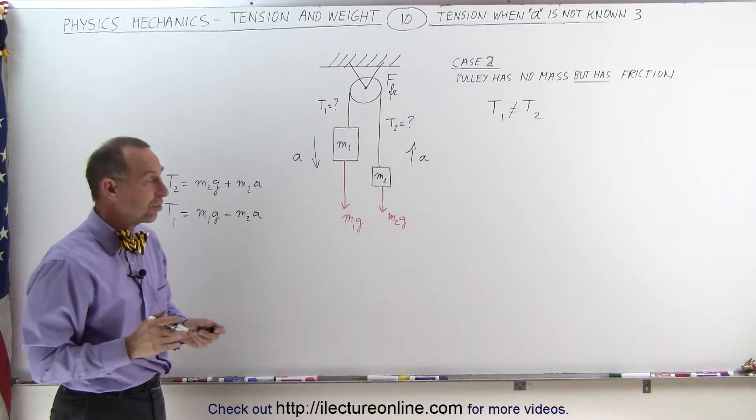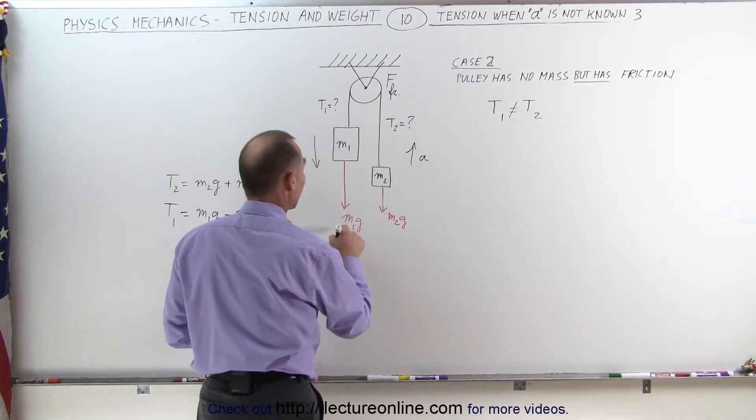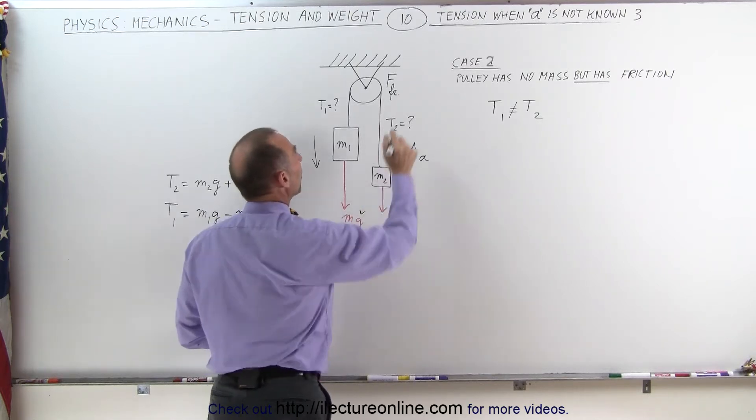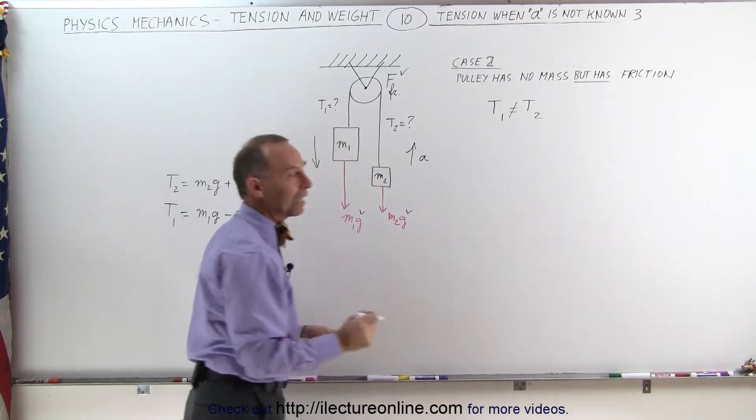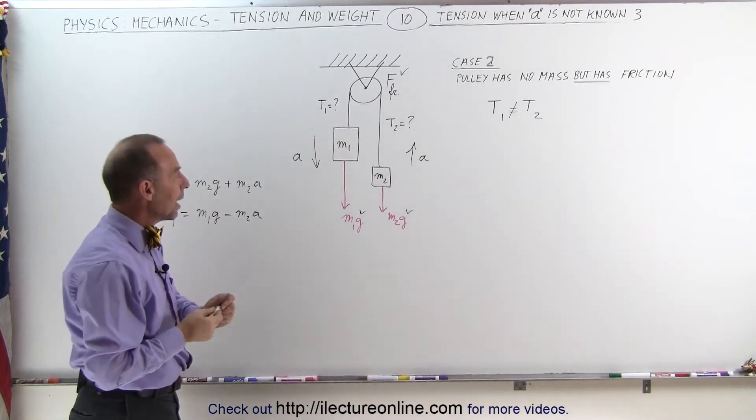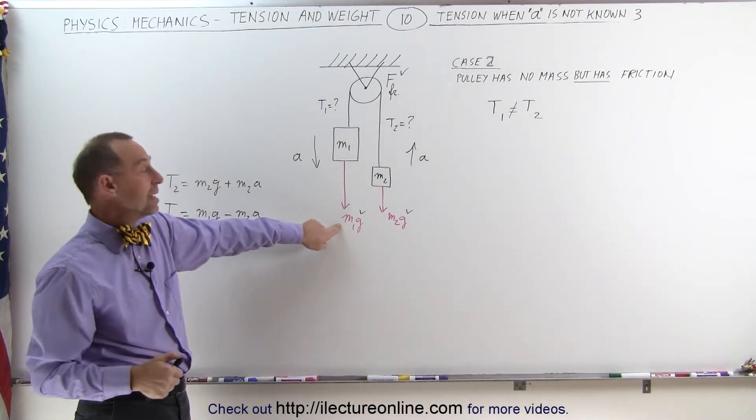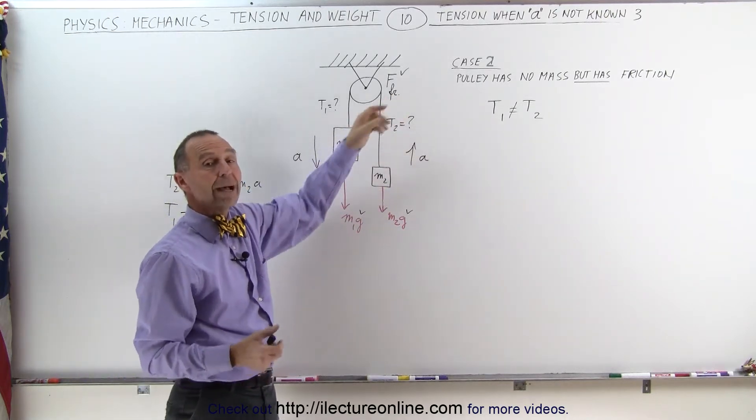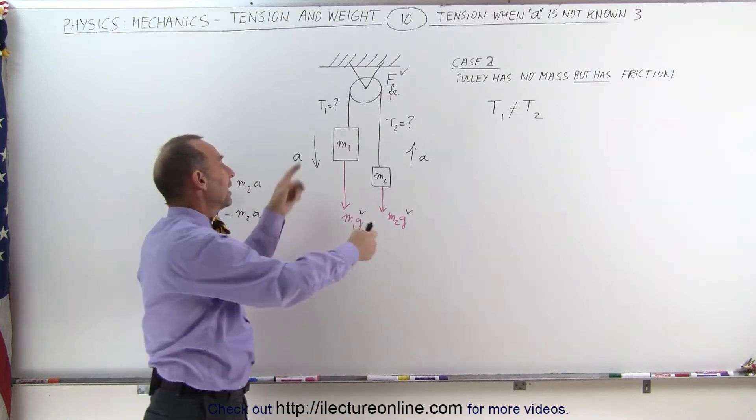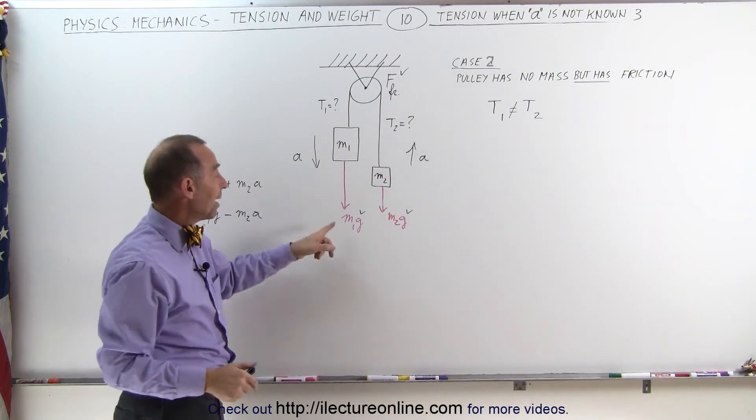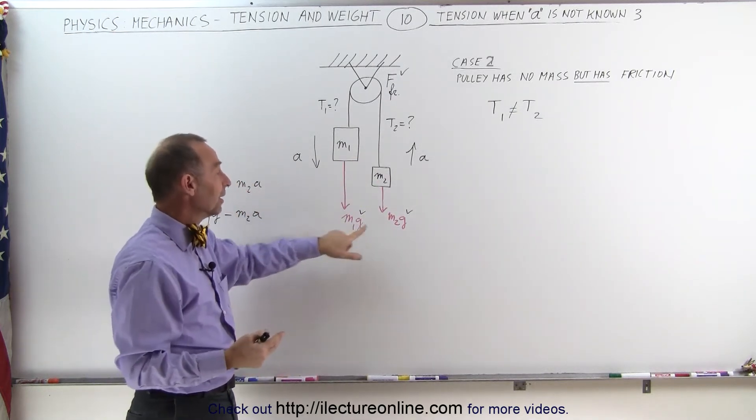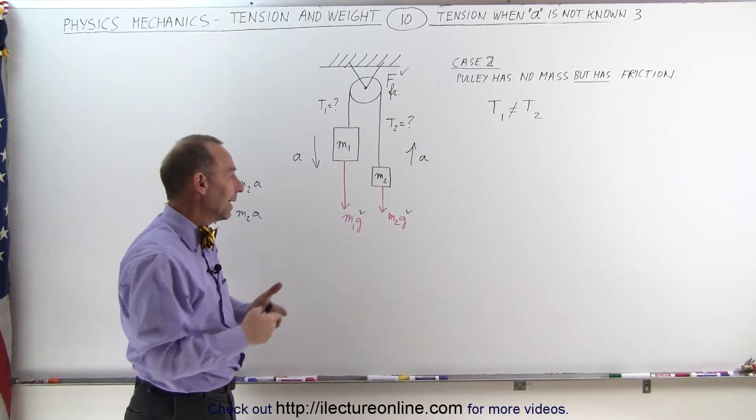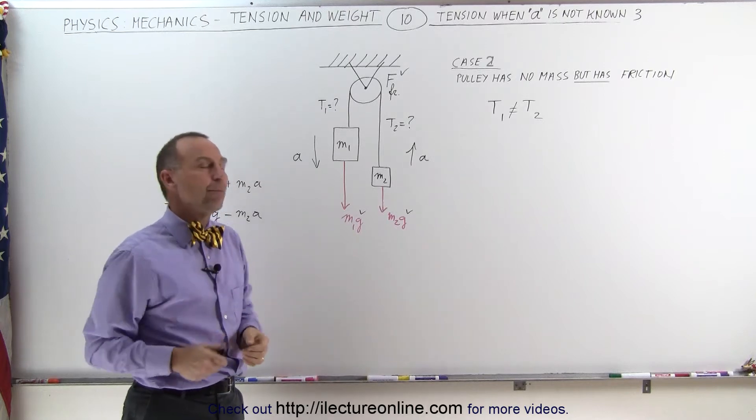And in this case, we have m1g, which is one of the two forces, m2g just like before, but we also have the friction force to take into account. Now, if m1g is bigger than the weight of the second block m2g and the friction force combined, there still will be acceleration in this direction. If m1g is not bigger than m2g and the friction force, then there will not be an acceleration, and the whole thing will just sit there and not move at all.